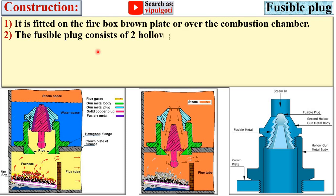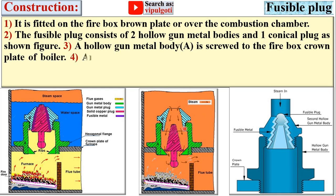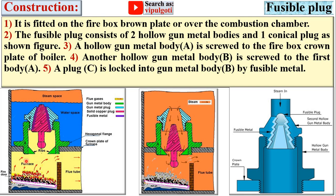The fusible plug consists of two hollow gun metal bodies and one conical plug as shown in the figure. Here you can see the two gun metal bodies and the conical plug. Hollow gun metal body A, shown here in green, is screwed to the firebox crown plate. Another hollow gun metal body B, shown here in blue, is screwed to the first body A.